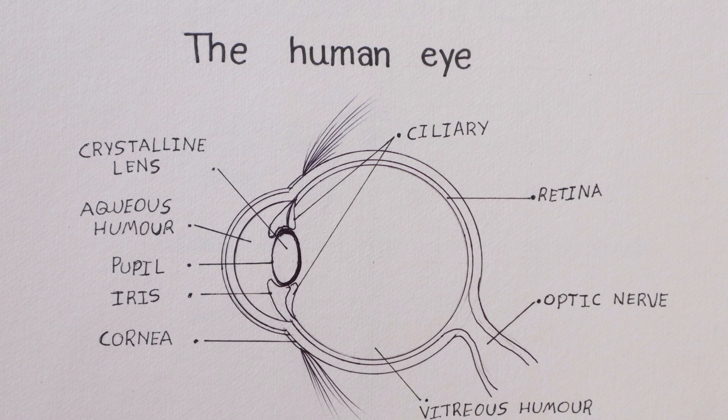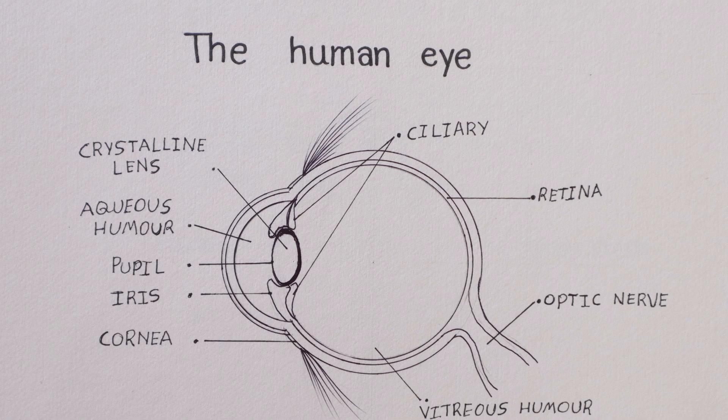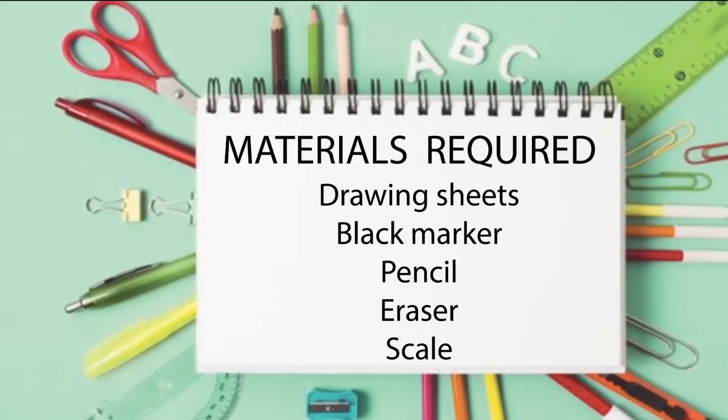So now let us learn how to draw the human eye easily. So students, materials required: drawing sheets, black marker, pencil, eraser, and then scale.